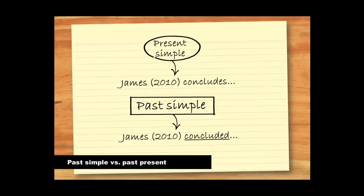Now let's look at the subtle difference between the past simple and the present simple when we refer to other people's research. James concludes implies agreement with the author's conclusions. However, if we want to create a distance between our view and the author's, we can say James concluded. Because the past simple provides distance, we would tend to use it rather than the present simple if we're going to critique the conclusions.